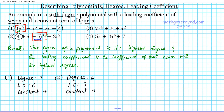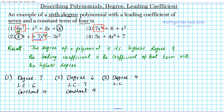For option three, there are three terms — it's a quartic trinomial expression. The highest power among the terms is four, so the degree is four. The leading coefficient is the coefficient of that term, which is seven — just like option two. And the constant term is six.